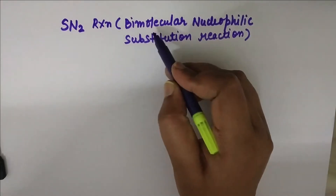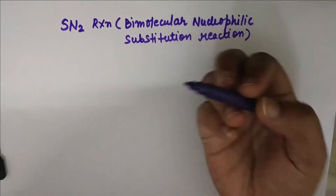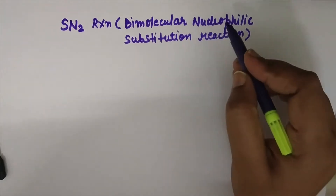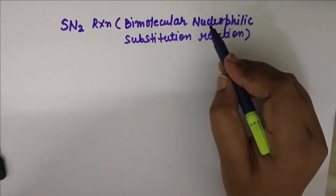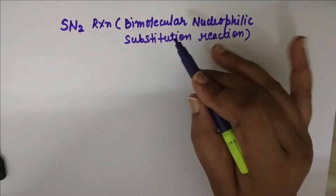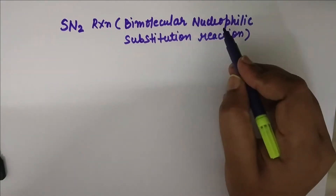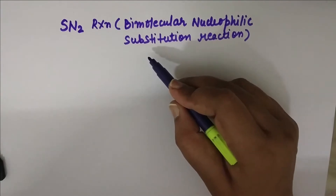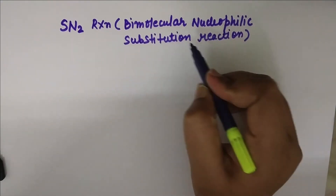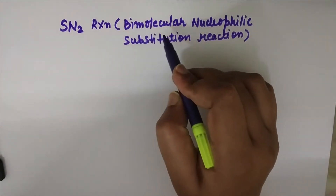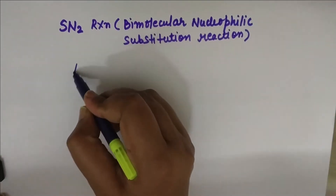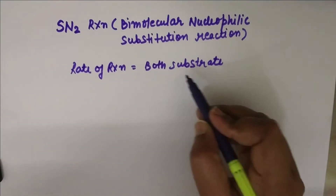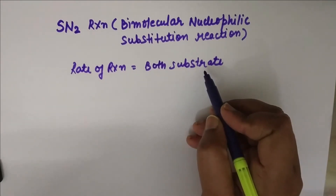As its name indicates, bimolecular means two molecules are involved, so the rate of reaction depends on two molecules. Nucleophilic substitution reaction means the nucleophile will substitute one of the functional groups present in the molecule. The rate of reaction depends on both substrates — one is the alkyl halide and the other is the nucleophile.